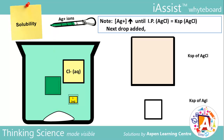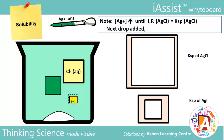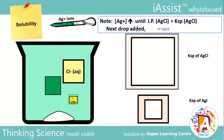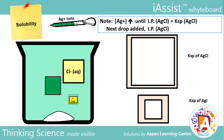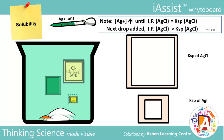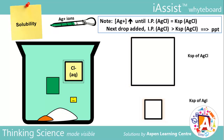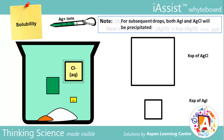When more Ag⁺ is added, both the IPs of AgCl and AgI will now exceed their Ksps, causing precipitation of AgCl and AgI to occur. From this point onwards, any further addition of Ag⁺ will cause both AgCl and AgI to be precipitated.